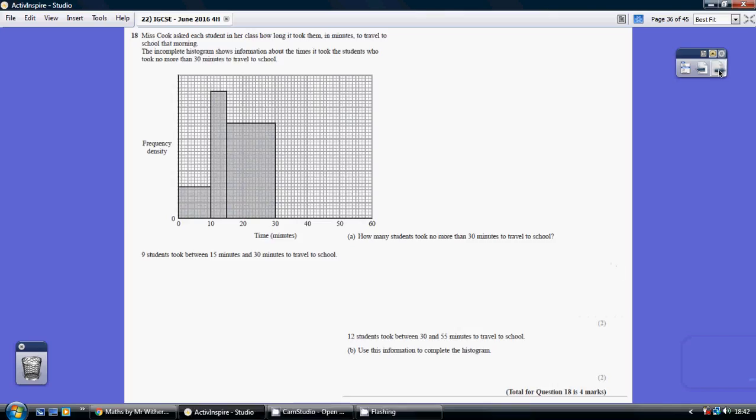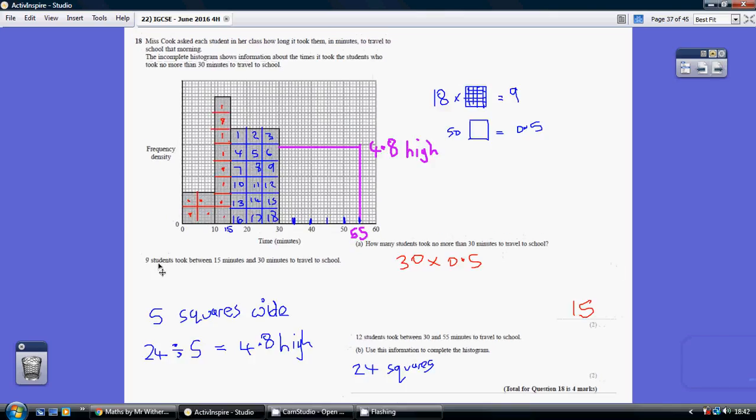Question 18. We're told that 9 students took between 15 and 30 minutes to travel to school. To make things easier to digest, I've broken the bar from 15 to 30 into these 5 by 5 squares and I see that I've got 18 such squares across which there are 9 students. So each of my 5 by 5 squares represents half a student.